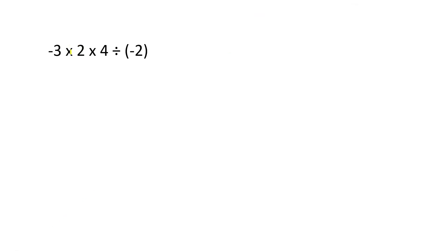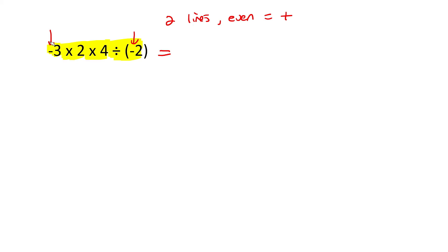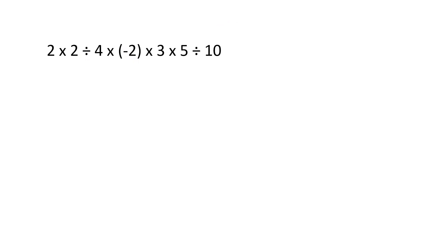Have a look at this one. There's a multiply, so we link those two numbers together. There's a multiply again, so we link those two together. And there's a divide, so we link all of that together. Now count the lines: one, two — that's two lines. Two is an even number, and even means positive. So the final answer will be positive. Ignoring all those signs: three multiplied by two is six, six multiplied by four is twenty-four, twenty-four divided by two is twelve. The answer is positive twelve.